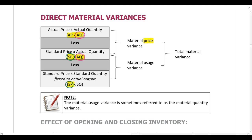Then only change one thing again: keep the price the same — we are working with the standard price — and only change the quantity. If the price is the same and the only thing we've changed is the quantity, we are comparing the actual quantity to the standard quantity, and that gives us a usage variance, also referred to as a quantity variance. The sum of the price variance and the usage variance gives you the total material variance.